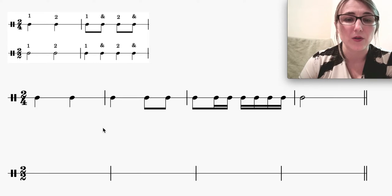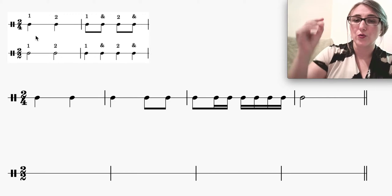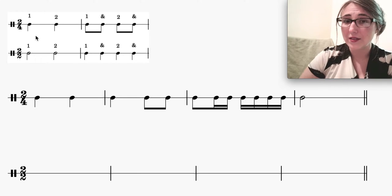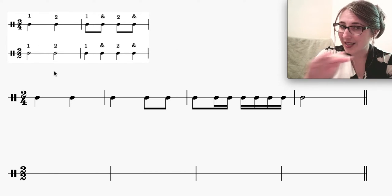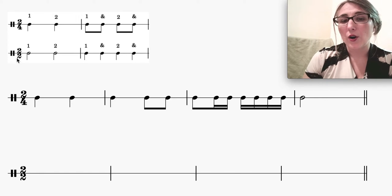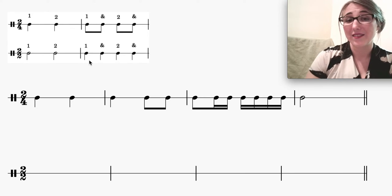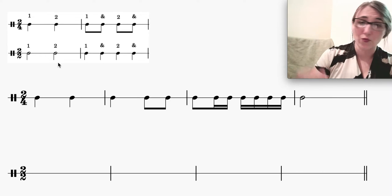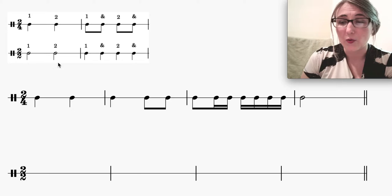In 2/4 time, my beat note is a quarter note — two beats, each note a quarter note. If I count out this simple one-bar example, I get 1, 2, 1-&, 2-& which are eighth notes. If I want to rewrite this in 2/2 time so it sounds exactly the same, then each of my beats are now half notes, so I need to double all of my rhythmic values. This rhythm sounds exactly the same — still 1, 2, 1-&, 2-& — but the rhythmic values are double what they were in the 2/4 example.